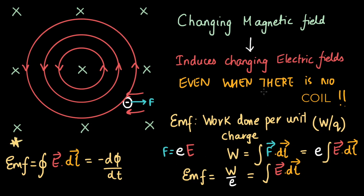So we started with how moving magnets make a bulb glow, and finally we are ending with changing magnetic fields inducing looping, circular, concentric electric fields. We expressed what we learned mathematically and included the factor of the induced electric field into Faraday's law. And now Faraday's law is complete. It is nice to see how far we have come.